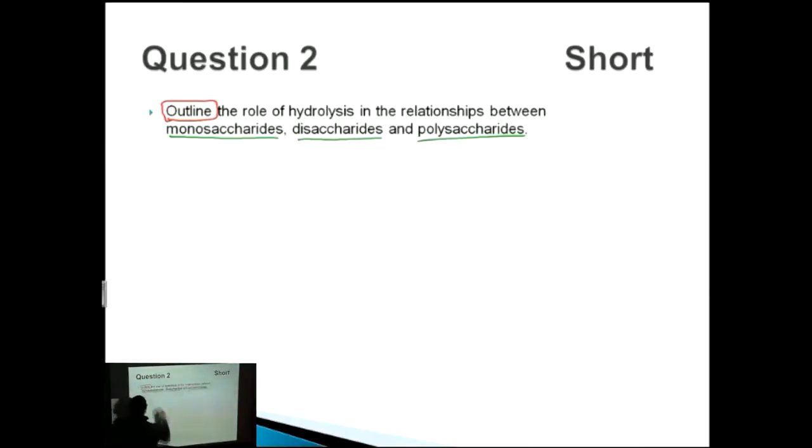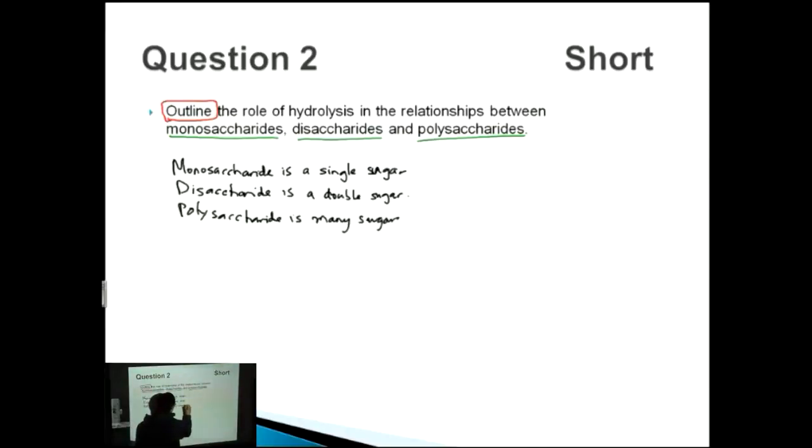Let's first of all define these words that are underlined in green. So monosaccharide is a single sugar, whereas disaccharide is a double sugar. How about polysaccharide? Polysaccharide is many sugars. So that's our first basis, we've defined those words.